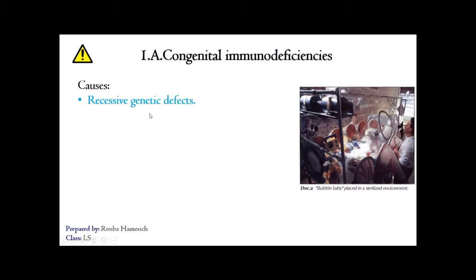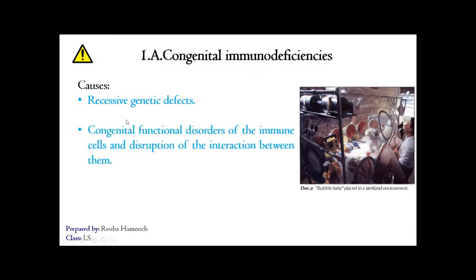In this video we will be explaining the congenital immunodeficiencies, their causes and characteristics. Congenital immunodeficiencies are recessive genetic disorders. They are also due to congenital functional disorders of the immune cells and disruption of their interaction, meaning malfunctioning of immune cells and immune components which may perturb the interaction between immune cells.